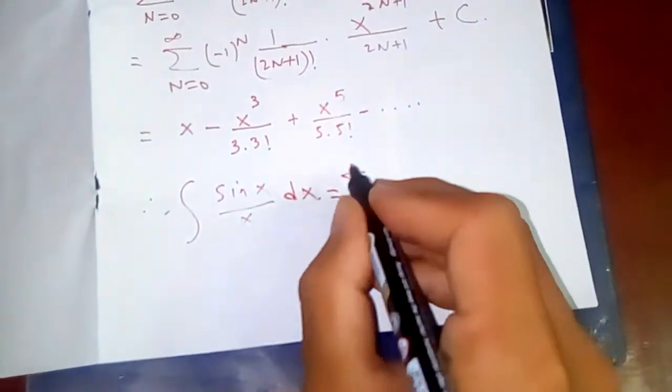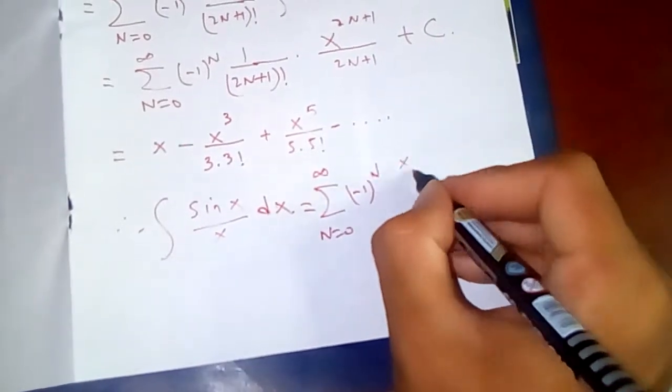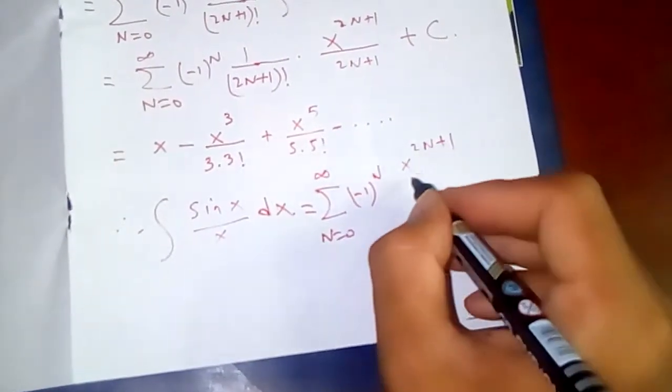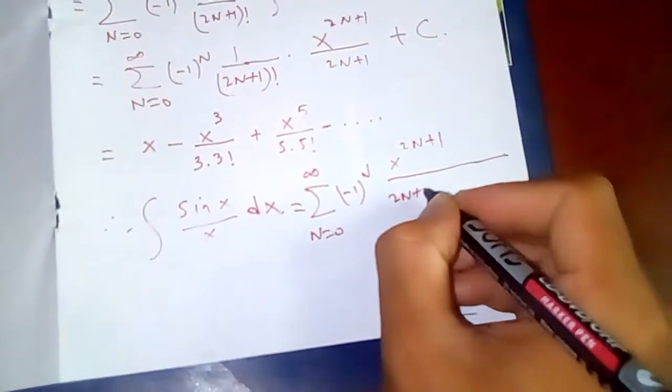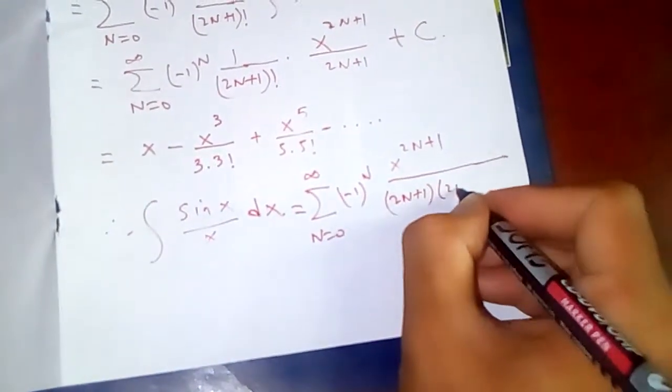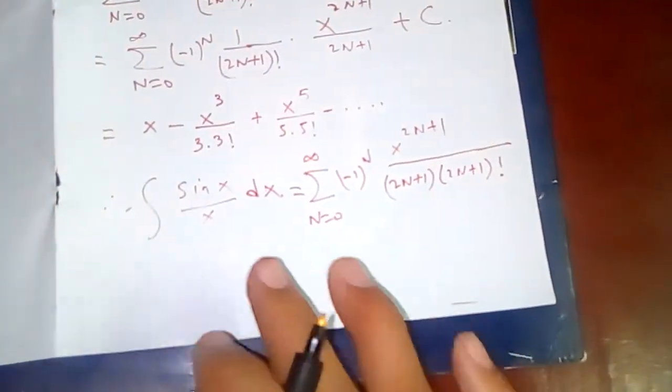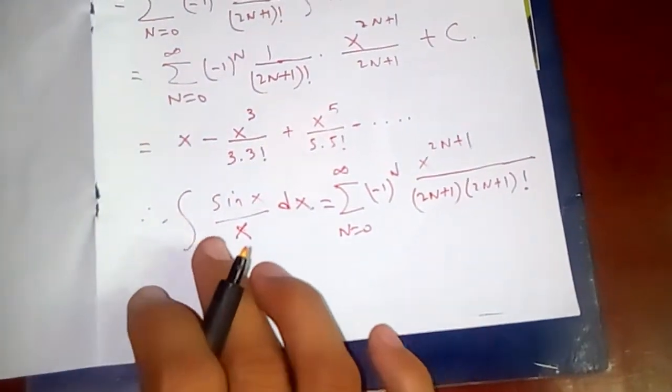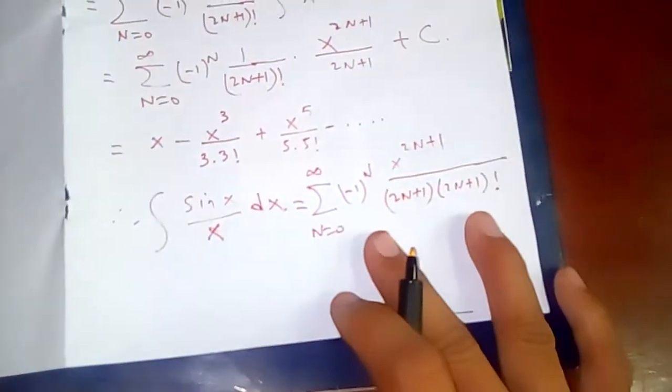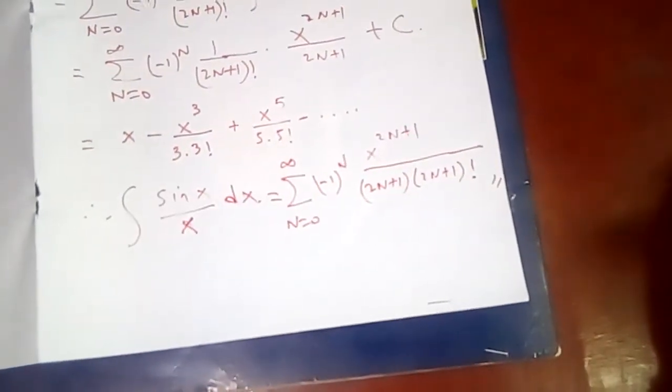This is nothing but our sum from n equal to 0 to infinity of (-1)^n times x^(2n+1) over (2n+1)(2n+1)!. So our integral, integral of sin(x) by x dx, turns out to be this series.